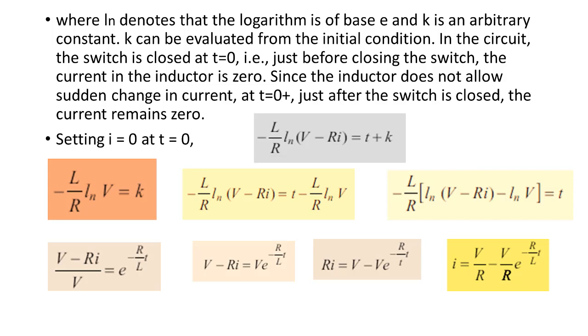Here V/R is the steady state response, and minus V/R exponential minus R/Lt is the transient response. So here this current is the complete response of the circuit.